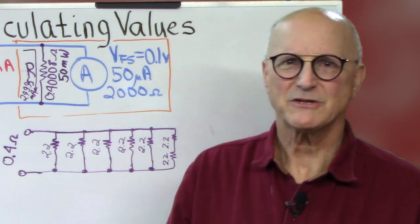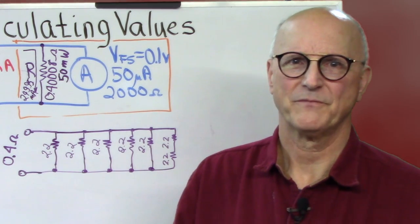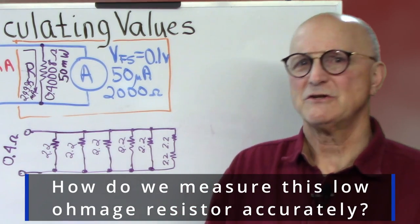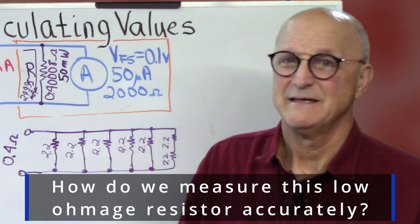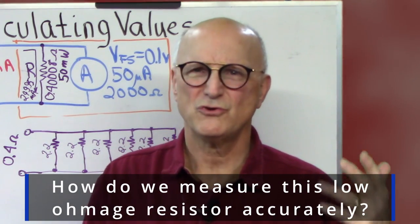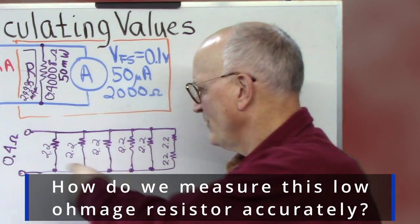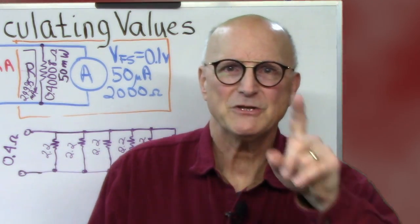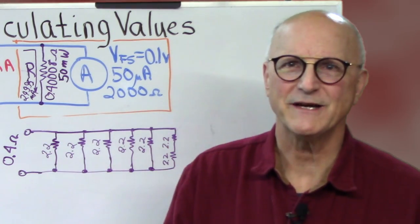So I might not have a real 0.4 ohm resistor. I need to measure this to see what I have. So, how can I know what this value is? Trying to do it with my DVM isn't going to hack the program because the DVM just, they don't do well at low resistor values like 0.4 ohms. So, let me show you a quick and easy way to do this.